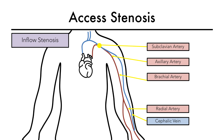Let's look at this radiocephalic fistula to understand axis inflow stenosis. Axis inflow stenosis indicates a low flow state due to a stenosis anywhere from the level of the subclavian artery down to the anastomosis. I like to think of axis inflow stenosis as a state of axis hypoperfusion.